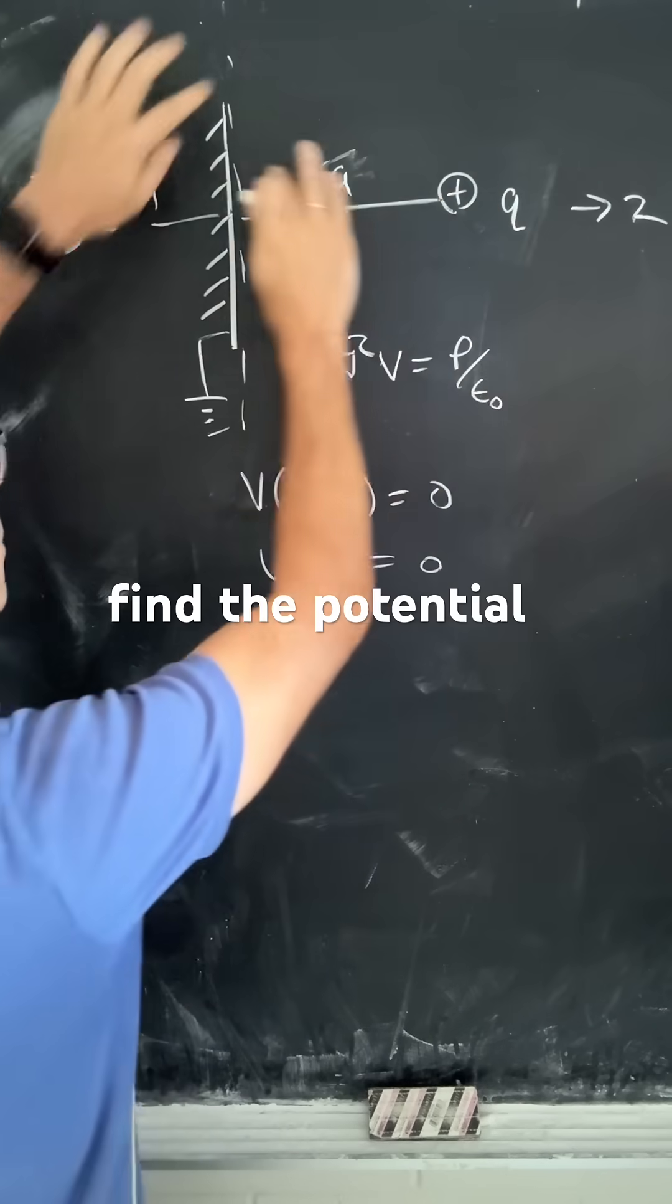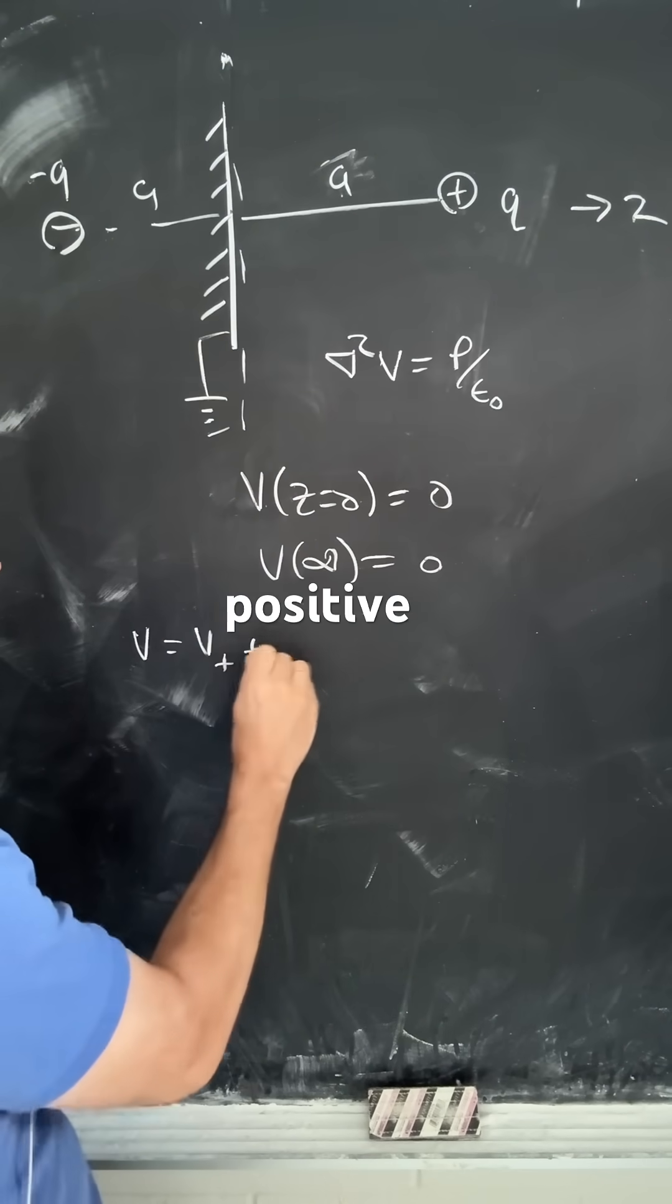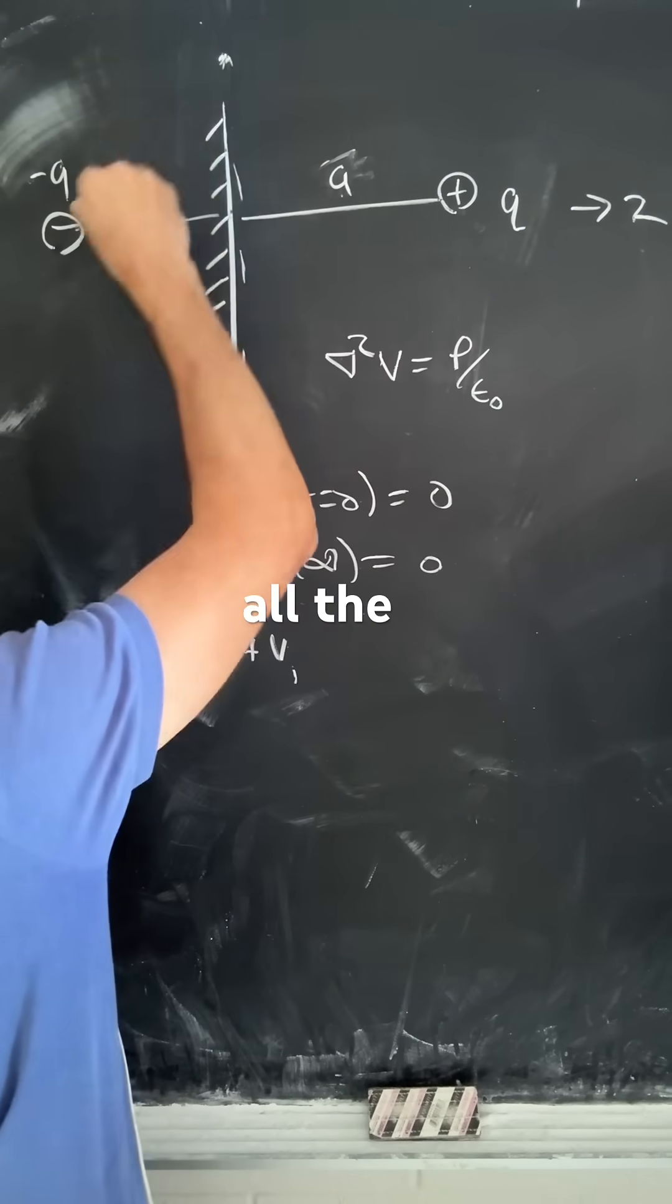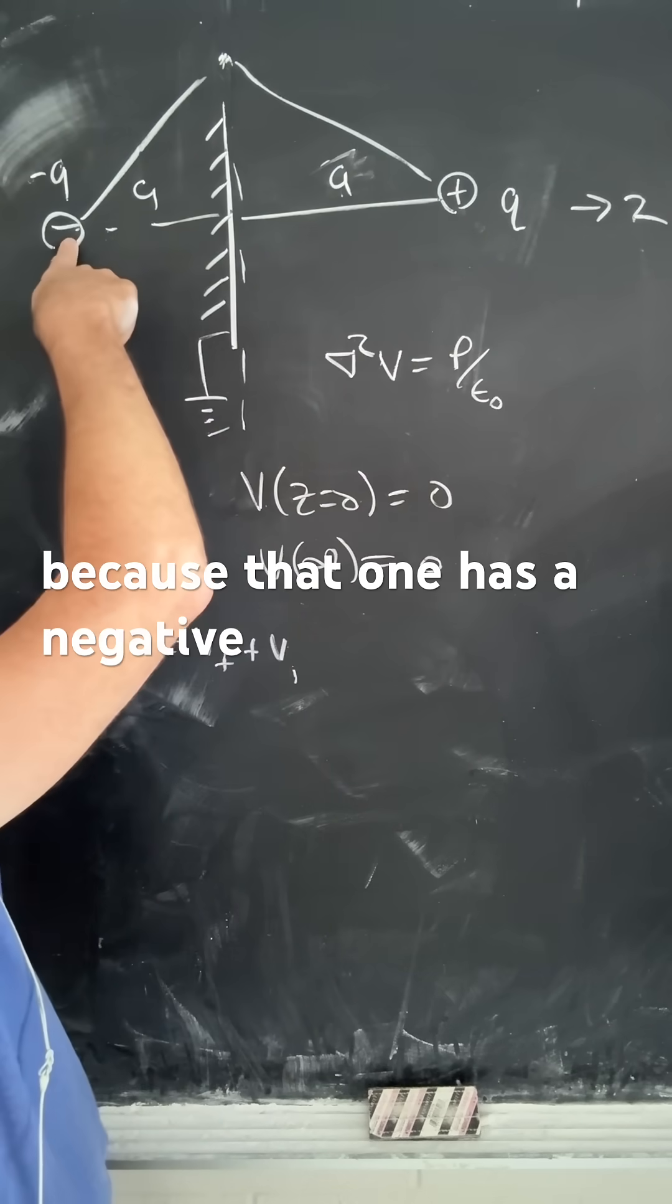If you find the potential along this point due to those two, V is V_positive plus V_negative. They're all the same distance away, so I get a potential of 0 because that one has a negative charge.